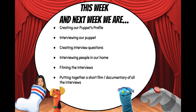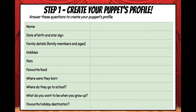We're going to put together a short film or documentary of all the interviews. The first thing you need to do — Step 1 — is create your puppet's profile. In creating your puppet's profile, you need to answer these questions about your puppet, and you can type on the right hand side.